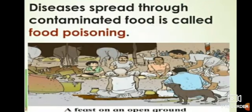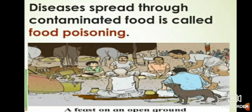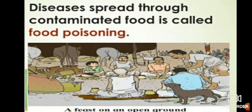Diseases spread through contaminated food are also called food poisoning. If you see the picture, it shows a large community meal where many people from a village have come together. Here also if the food is in the open and not covered, the disease can naturally be spread - this is called food poisoning.